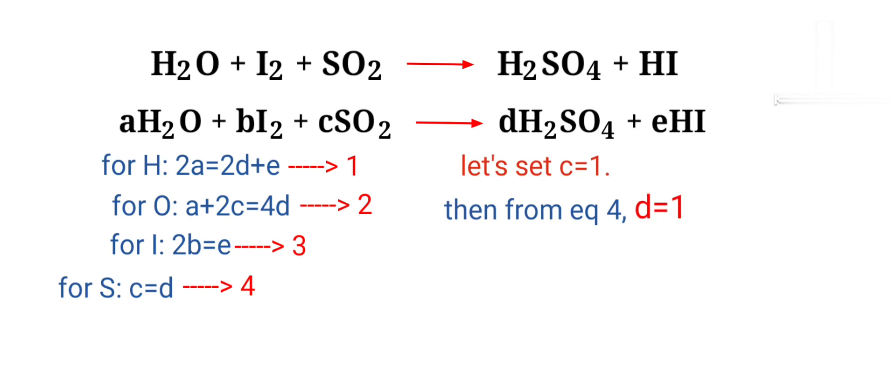Now you can apply the D value in equation 1. Then 2A equals 2 plus E. Now apply the C and D values in equation 2. Then A plus 2 equals 4. So A equals 4 minus 2, that equals 2. Therefore A equals 2.